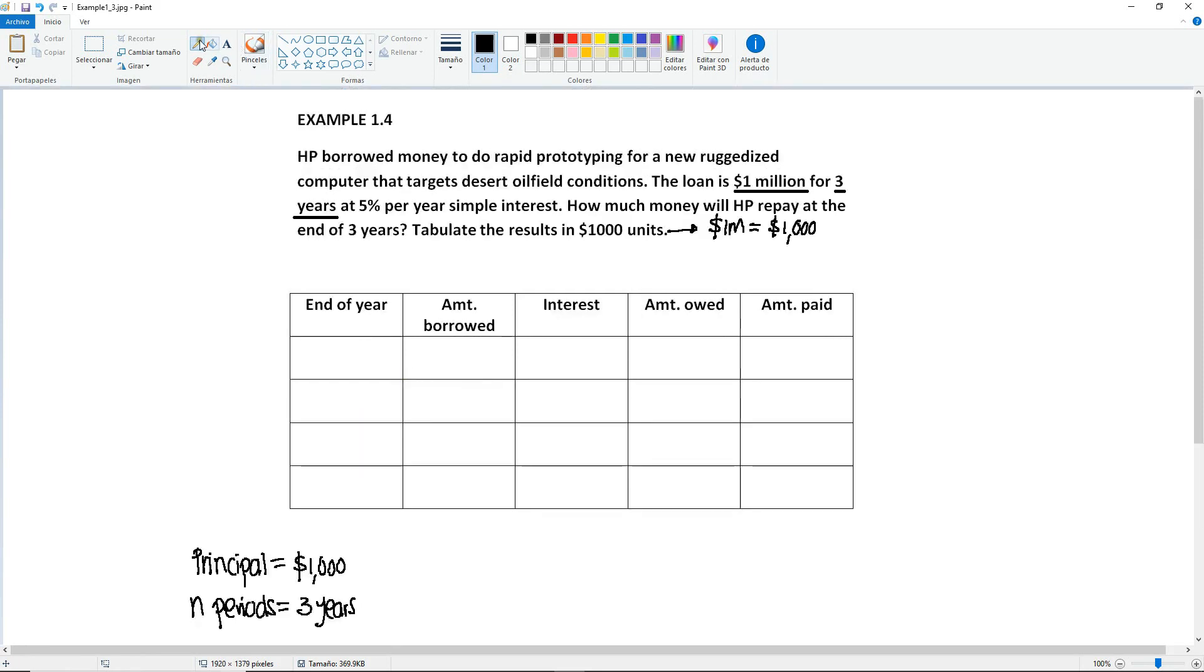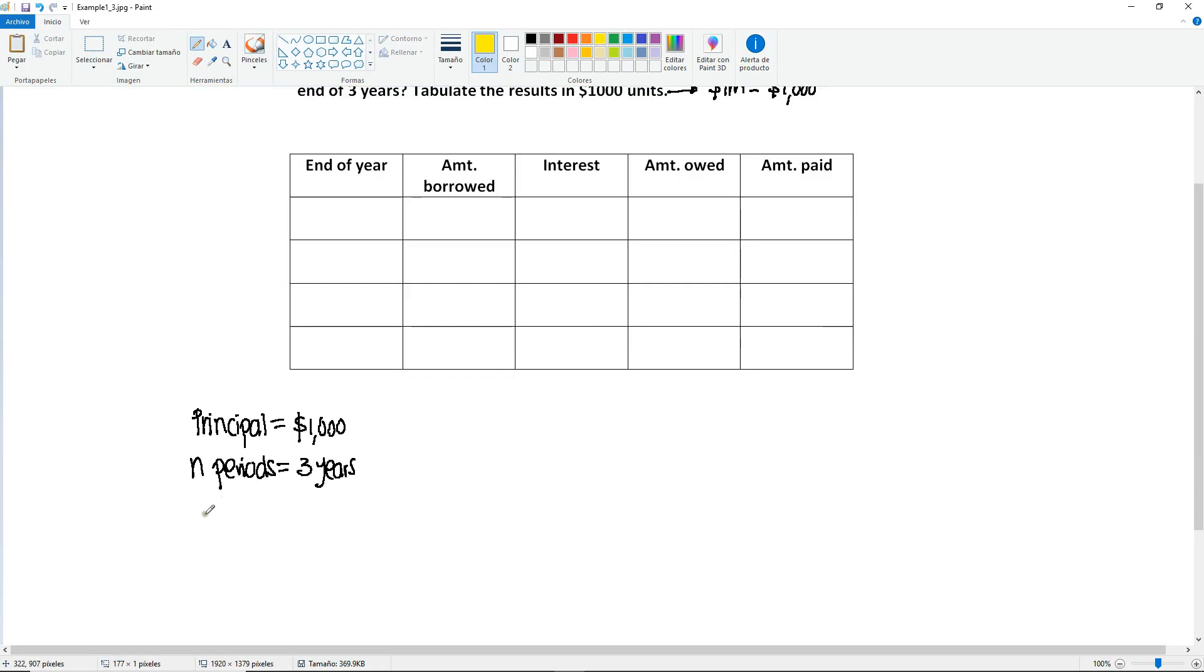Then we also know that it's gonna be at 5% per year, and that this is gonna be simple interest. I'm gonna put this in a different color just to differentiate it. So we know here that the interest rate is 5% per year simple.